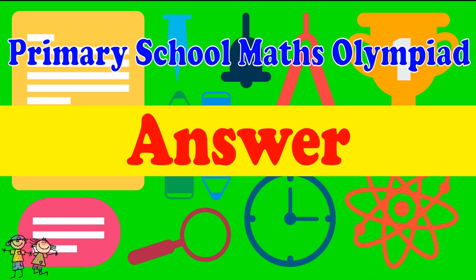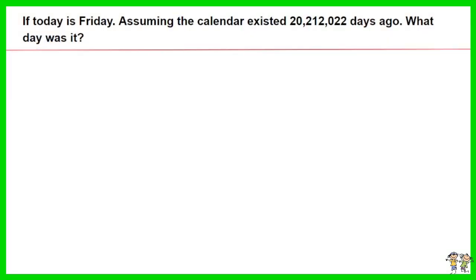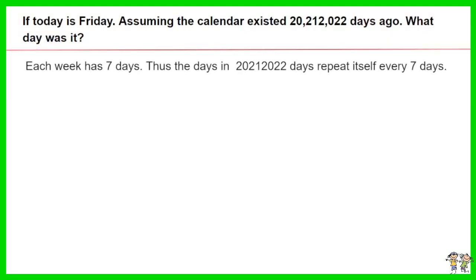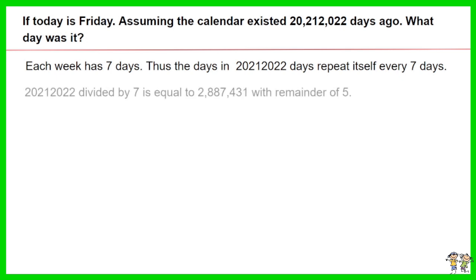Here is the recommended answer. Each week has 7 days. Thus the days in 20,212,022 days repeat itself every 7 days. 20,212,022 divided by 7 is equal to 2,887,431, with a remainder of 5.